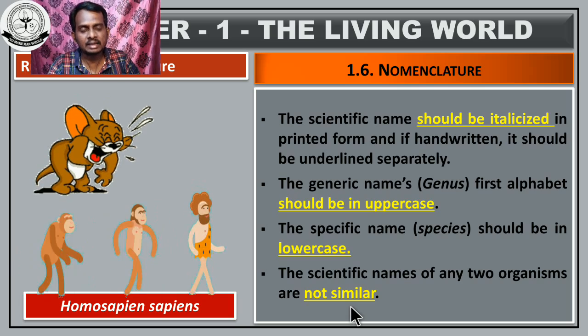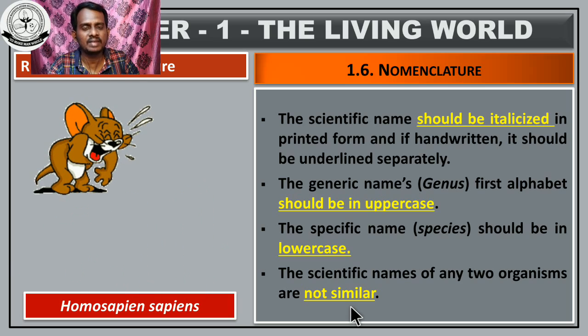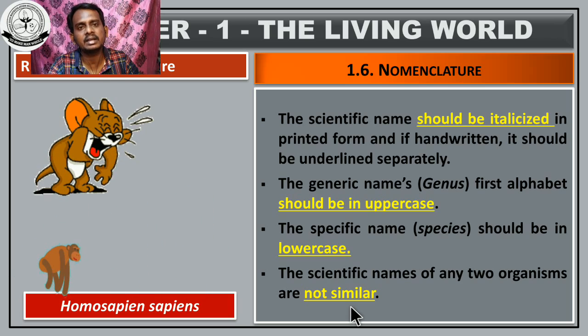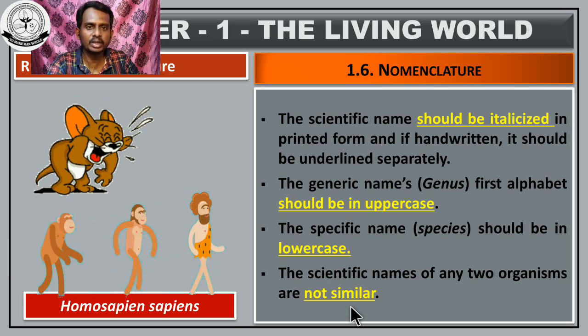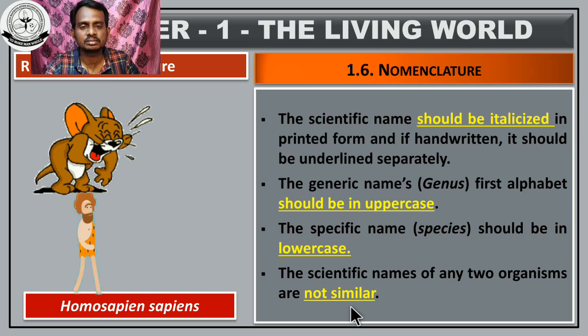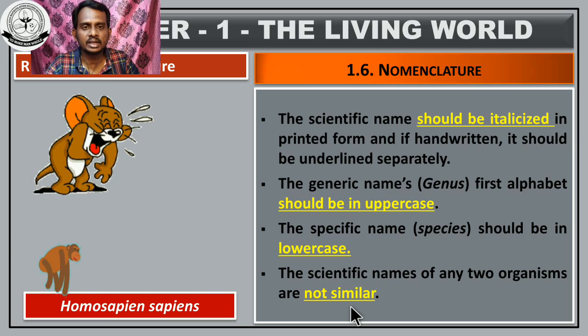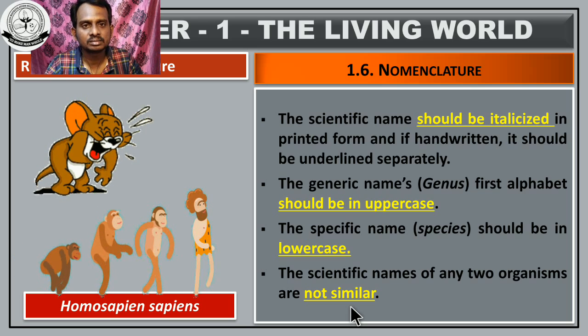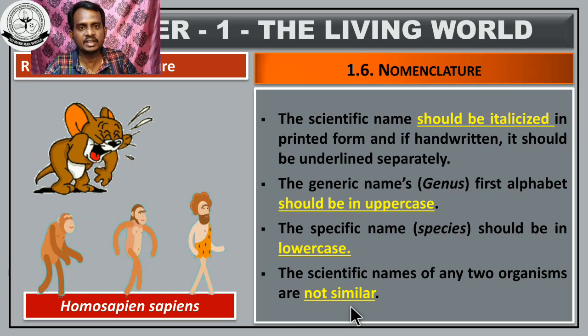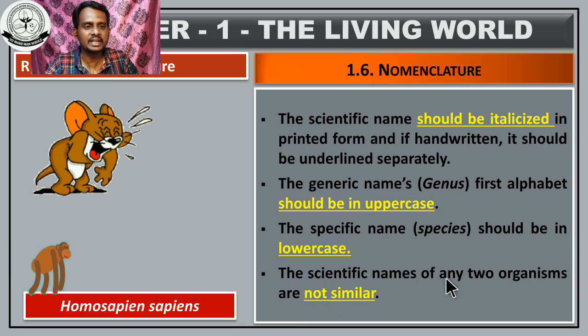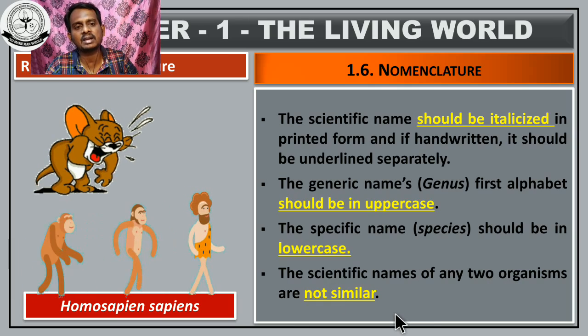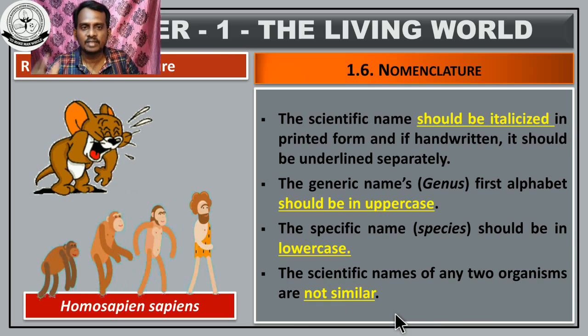Each organism should have a single name — one organism, one name. The scientific name of any two organisms are not similar. So the rules so far: should be italicized; genus name should start with uppercase; species name should start with lowercase; and each organism's scientific name must be unique.